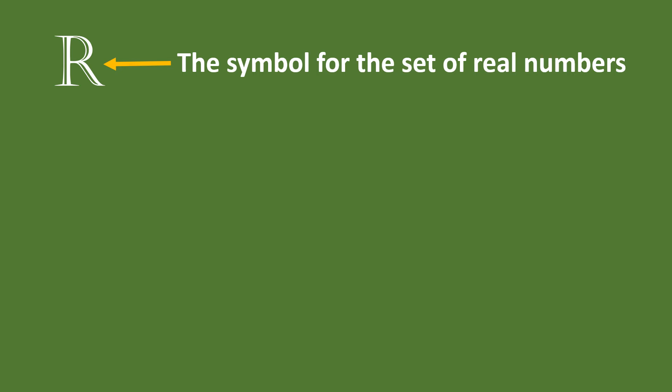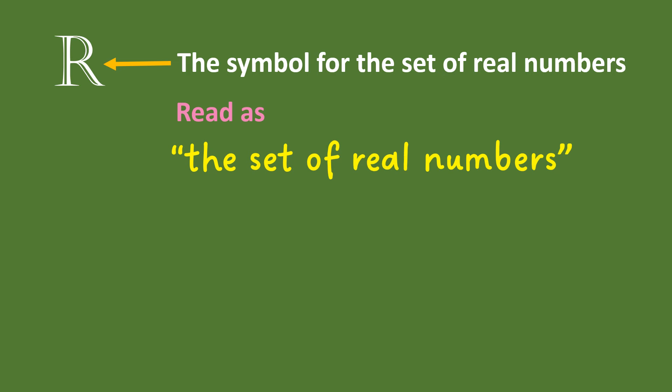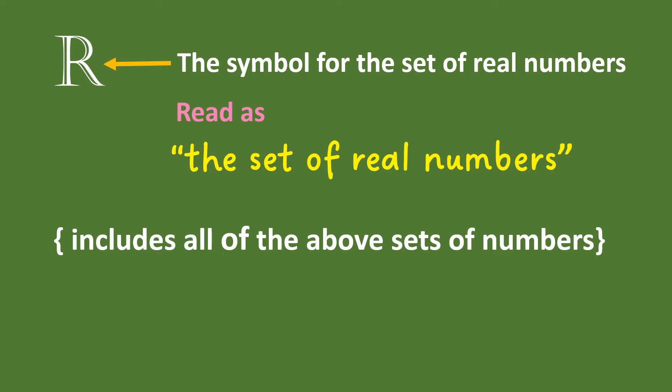The capital letter R represents the set of real numbers. When you see the capital letter R in a mathematics book, you read it as the set of real numbers. The set of real numbers includes all of the above sets of numbers — that means it includes the set of natural numbers, the set of whole numbers, the set of rational numbers, and the set of irrational numbers.